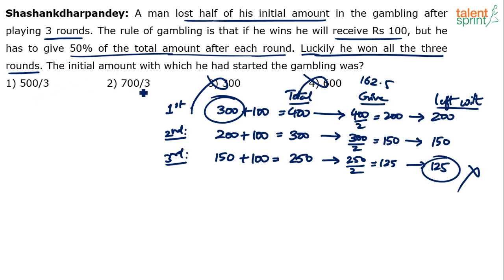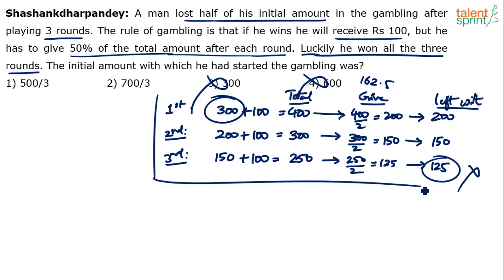So clearly options 3 and 4 are eliminated; the answer is either 500/3 or 700/3. You can verify that with the remaining options. But let us also discuss the regular algebraic method of solving this question.